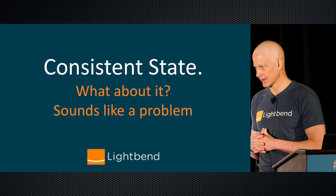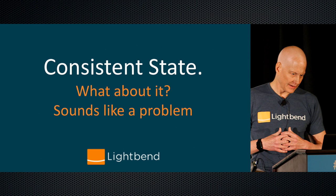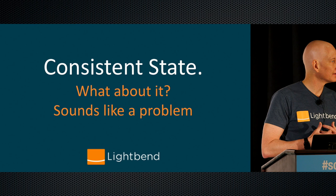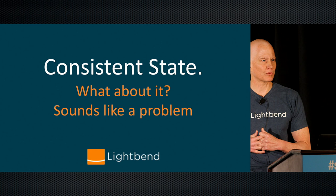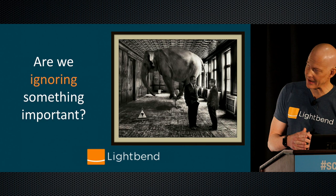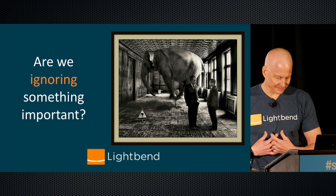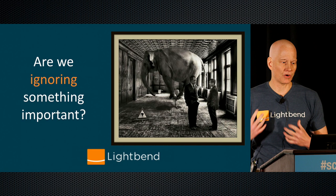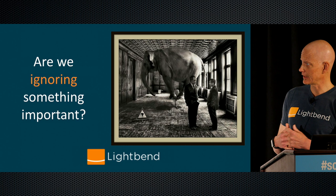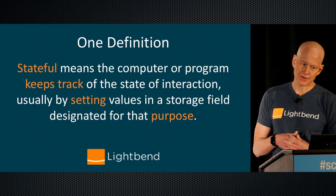In monoliths we're spoiled — we have transactions we can roll back, sequential processing, a single database everyone uses. As we move into the new landscape, that solution is going by the wayside. The idea of strong consistency: if banks treat it as a commandment, why do we have overdraft fees? Why do we have backorders on inventory? That should never happen if we're strongly consistent. But that's how the real world works — so why try to enforce our systems to act differently?